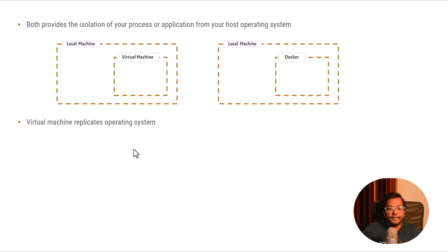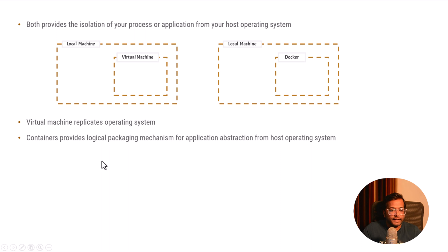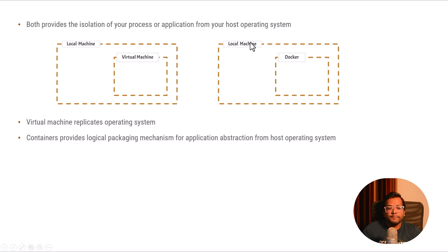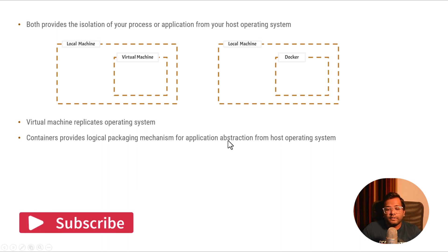Virtual machines replicate your operating system — they mimic the host operating system fully, so all the functionalities of the host OS are present inside the isolated virtual machine environment. Containers, on the other hand, provide a logical packaging mechanism for application abstraction from the host operating system. They only provide the logical packaging layer while all other things from the host OS are used through an abstraction technology.